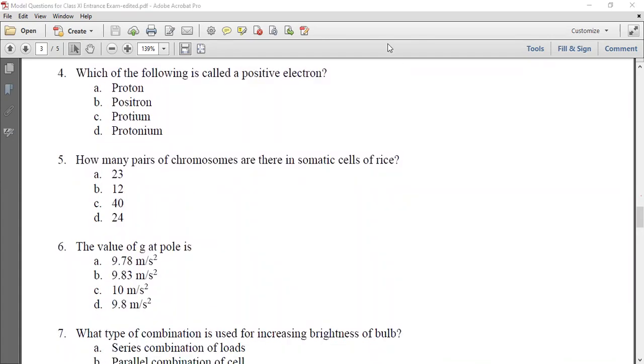Now, let's look at this. What is the following question? Which of the following is called a positive electron? If the electron is a negative charge, it is an antiparticle. It is a positive electron called positron.